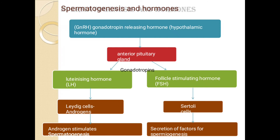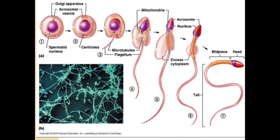LH activates Leydig cells which secrete androgen. The secreted androgen stimulates spermatogenesis — meaning spermatogenesis is possible due to LH. FSH activates Sertoli cells. Sertoli cells secrete factors due to which spermiogenesis becomes possible. The spermatid — which is non-active and non-motile — will be transformed into the sperm which is active and motile.